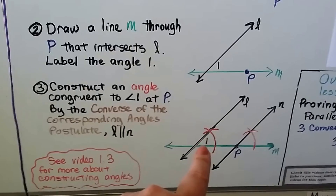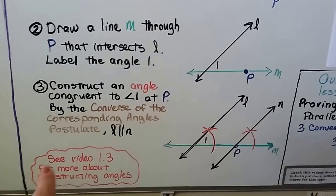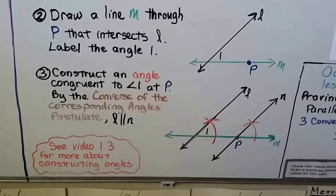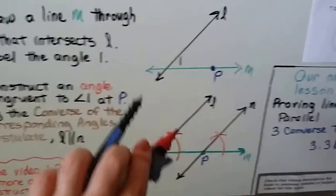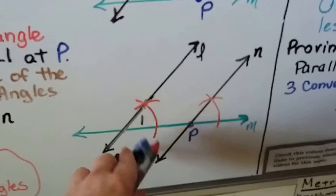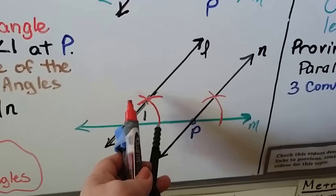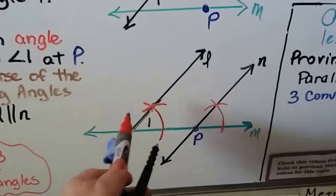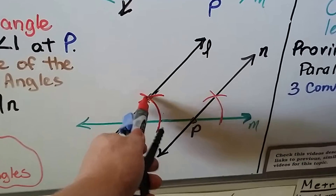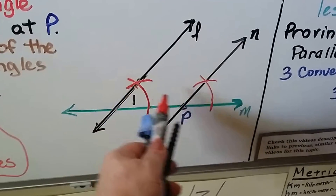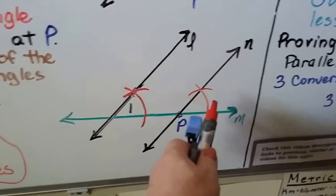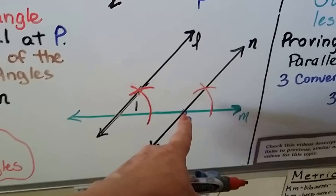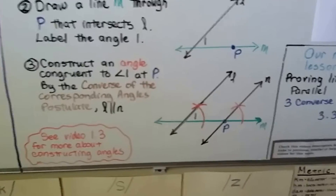Then we construct an angle congruent to angle 1 at P — we did this in video 1.3. To recap: place the compass point at angle 1 and make an arc. Then place the compass point where it intersected and make another arc. Take the measure from the intersection to that point and make an arc at P. Then place the compass there, make another arc, and use a straight edge to draw a line through P and the intersection. That will make the parallel line.